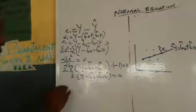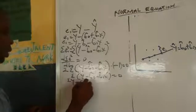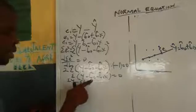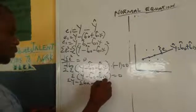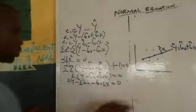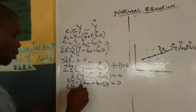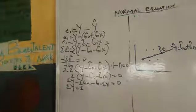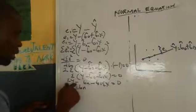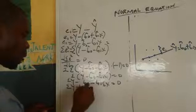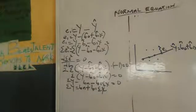Opening the brackets and rearranging, we get summation Y minus B0·n minus B1·summation X equals zero. Moving terms to the right side gives us: summation Y equals B0·n plus B1·summation X. This is equation one — our first normal equation.